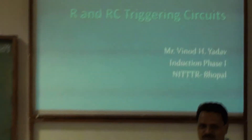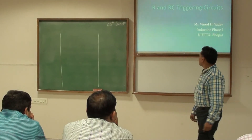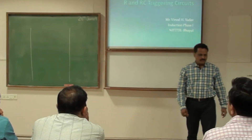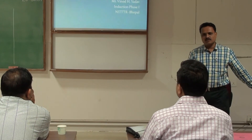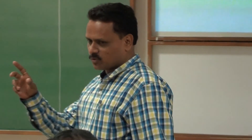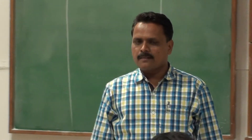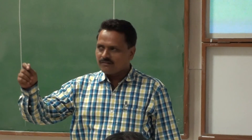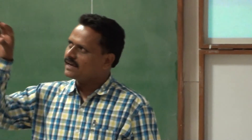Good afternoon, this is Vinod Yaga and I am covering the topic R and RC Triggering Circuits. As we all know, we have fans at home and these fans run by an AC motor because AC supply is given to them. Along with that, we have a regulator to control the speed of a fan. So just imagine what could be there inside it — an electronic circuit. How does that electronic circuit function?